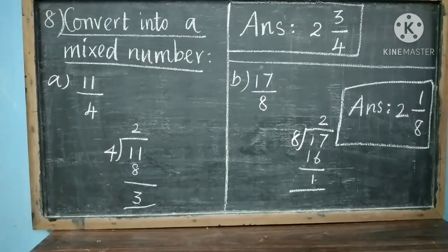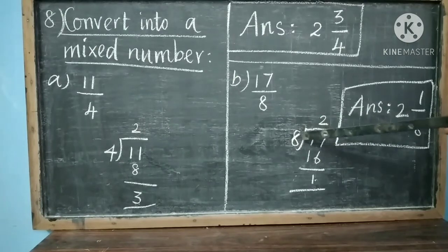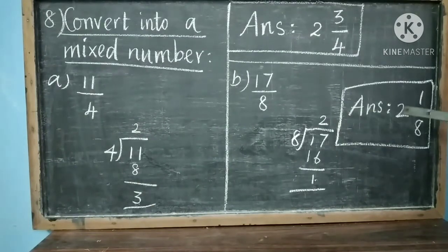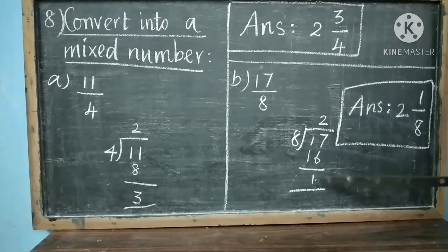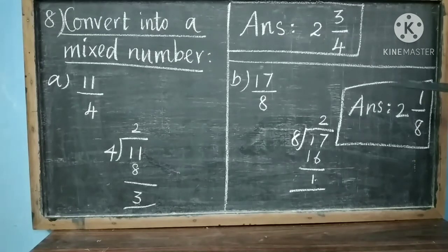Let us solve one more: 17 by 8. Is 17 by 8 a proper fraction or an improper fraction? It is an improper fraction because the numerator is bigger. To change this as a mixed fraction, divide 17 by 8: 2 eights are 16, remainder 1. The quotient 2 is the whole number, remainder 1 is the numerator, and divisor 8 is the denominator. Let us check: 2 eights are 16, plus 1 is 17. So our answer is 17 by 8, and our mixed fraction is correct.